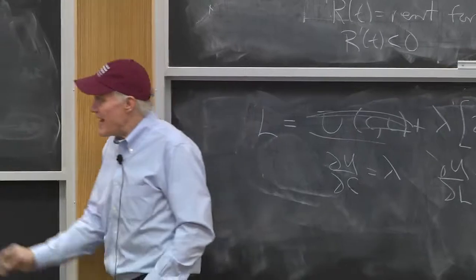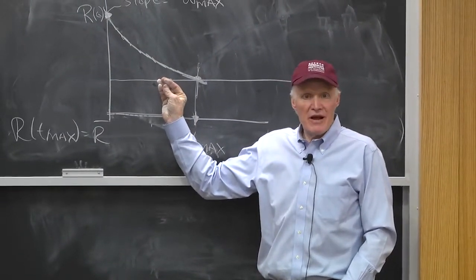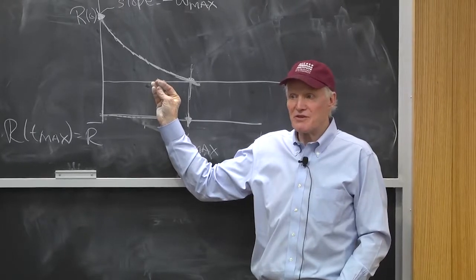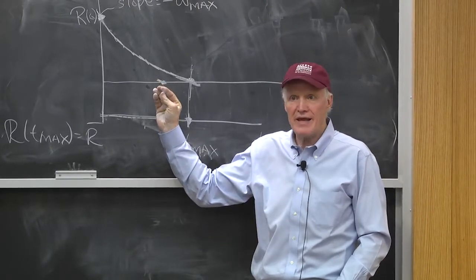The price has to be the same because the guy who lived 9.7 miles from the city is indifferent between that and living 9.71. There can't be a jump.